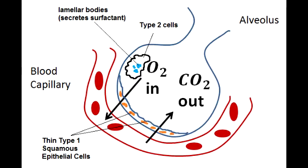Describe the content of surfactant. Pulmonary surfactant is a complex mix of lecithins, and the most important of these is dipalmitoyl phosphatidylcholine. The synthesis of surfactant begins around week 26 of gestation, but mature levels of surfactant do not occur until week 35 of pregnancy.